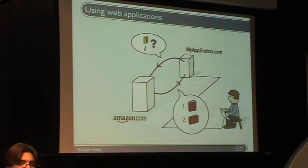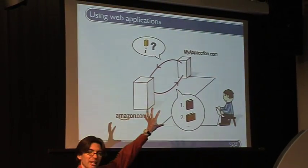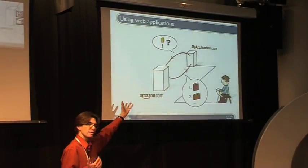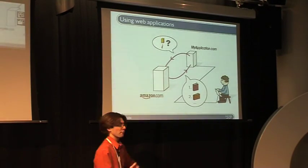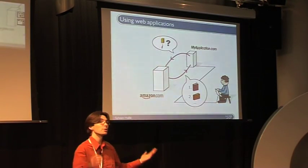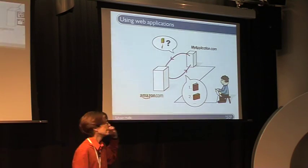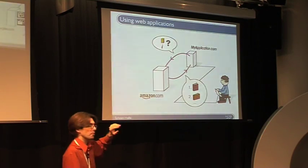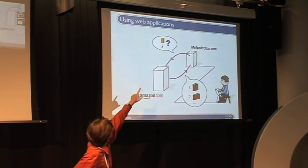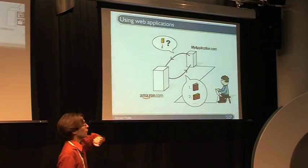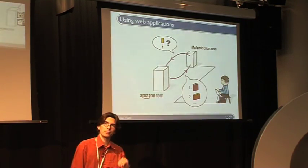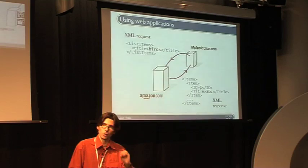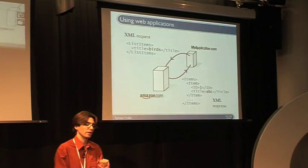The context in which I'm doing my work is this: you have a small web application on some random server that's using a third-party web service in the background. Here I have Amazon.com as an example, but you could think of any web service provider. We're thinking about these applications at the message level — requests and responses — and specifically in terms of their XML content.